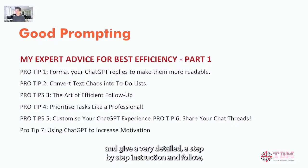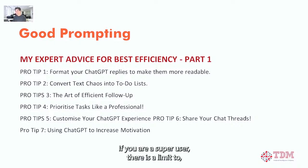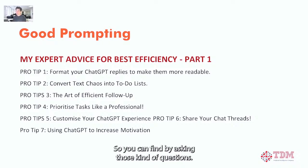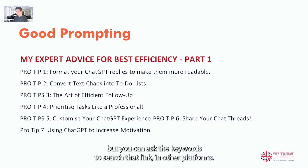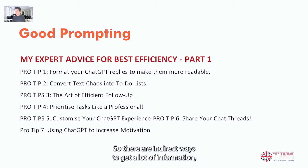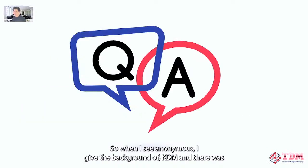For efficient prompting: treat it like a personal assistant and give very detailed, step-by-step instructions and follow-up. Summarizing works well. There is a limit to response and input size. One trick: ChatGPT won't give you a link, but you can ask for keywords to search that link on other platforms. These are some best practices for the prompting side.